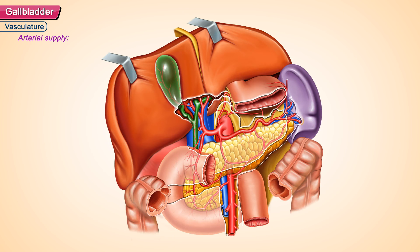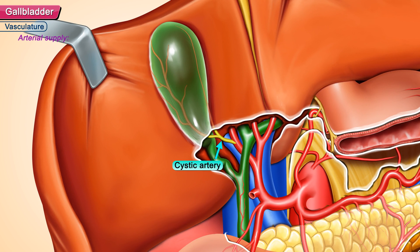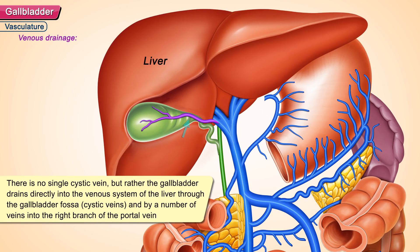Vasculature — arterial supply: The gallbladder is supplied by the cystic artery, a branch of the right hepatic artery, behind the common bile duct. Venous drainage: There is no single cystic vein; rather, the gallbladder drains directly into the venous system of the liver through the gallbladder fossa, or via cystic veins, and by a number of veins into the right branch of the portal vein.